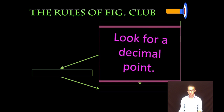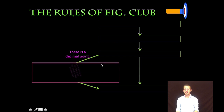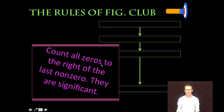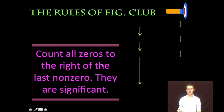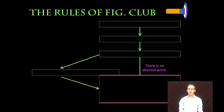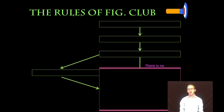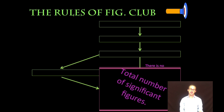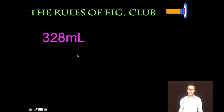Rule number three: look for a decimal point. If there is a decimal point, your next step is to count all the zeros to the right of the last non-zero digit. That decimal point indicates those zeros have also been measured and are therefore significant. If there is no decimal point, you reach the total number of significant figures one step sooner. This is something that just takes a little bit of practice, so we're going to run through a couple of examples.